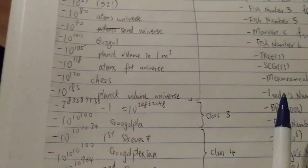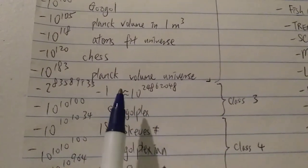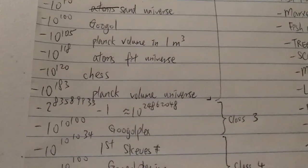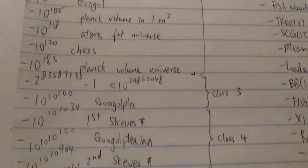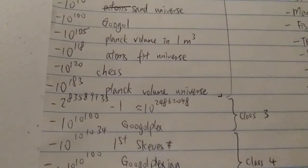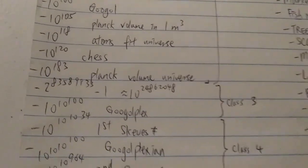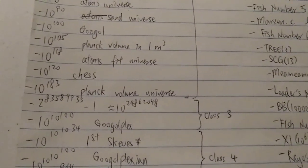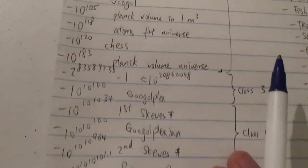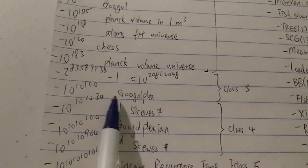In class 3, the first number is 2 to the power of 83 million something minus 1 — this is the largest known prime number as of December 2018. Two years have passed since then and no larger known prime has been found. The last few record primes had been discovered within two or three years of each other, but computation limits may be slowing things down. This number has around 24 million digits, much bigger than 10 to the 183 which only has 183 digits.